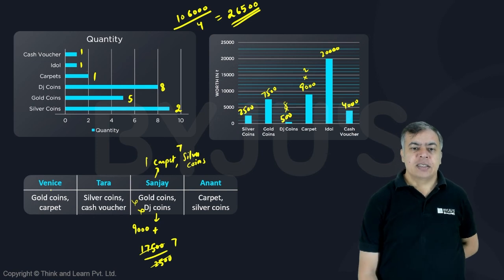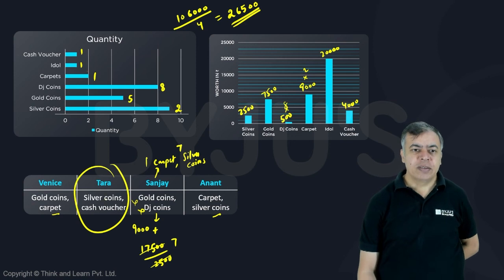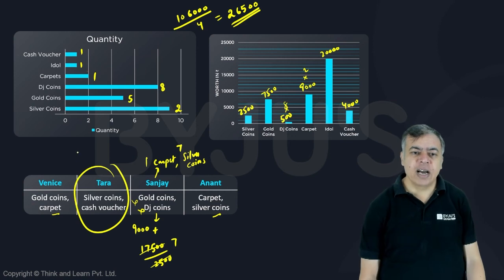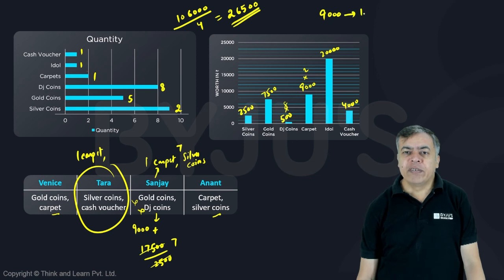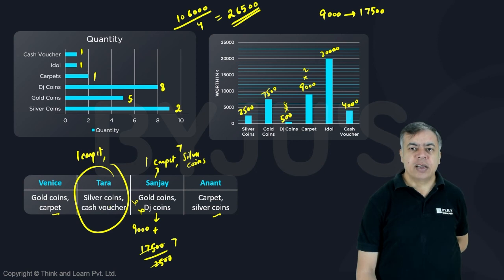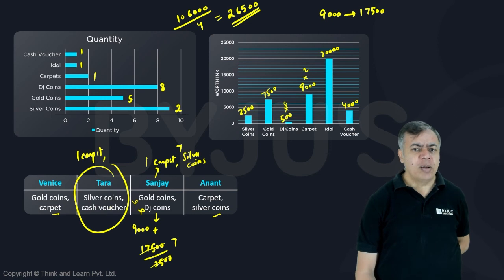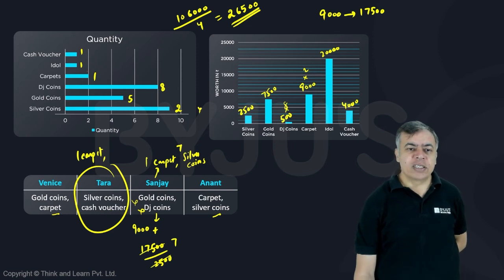Venice doesn't have carpet, and Anant doesn't have carpet. Since Sanjay already has his, Tara must have the remaining carpet. After giving Tara 1 carpet (9,000), remaining worth = 17,500. Tara cannot have the cash voucher (4,000 term doesn't work), cannot have the idol (that is 20,000, exceeding 17,500), and cannot have silver coins.